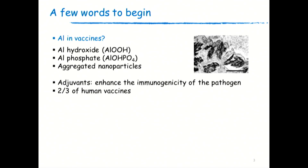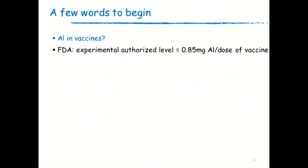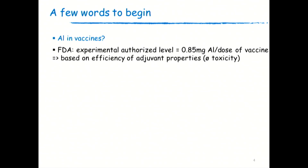You can find aluminum salts in two thirds of human vaccines. Remember that you can find vaccines against the same diseases without aluminum adjuvants or with other adjuvants, and they worked — we had them in France until about 10 years ago. The authorized level was defined by the FDA at 0.85 milligrams of aluminum per dose of vaccine, and it is defined based on the efficiency properties of the adjuvant. This is not defined from a toxicity or safety point of view.